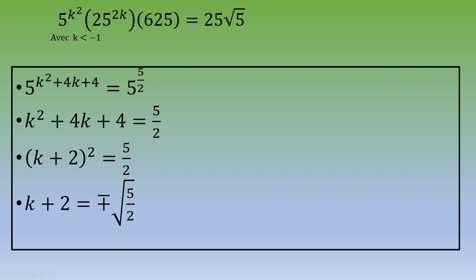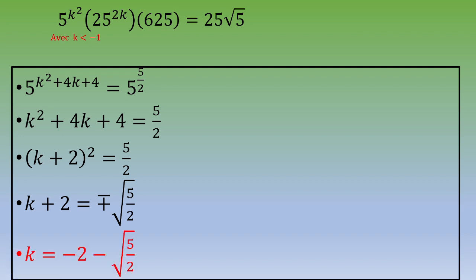We are looking for the value of k, and pay attention to that. We need to find k such that k is strictly below -1. So the only answer is k equals -2 minus √(5/2).